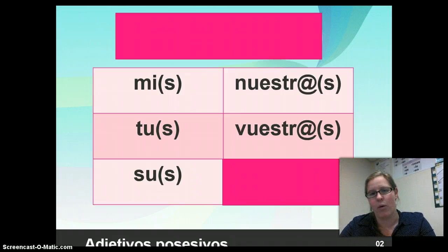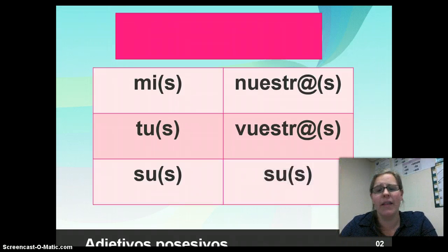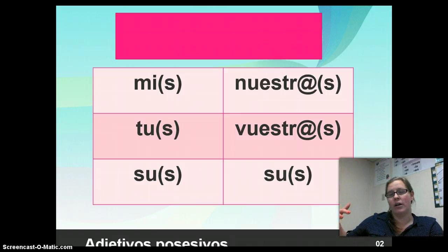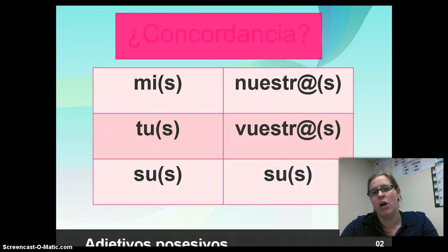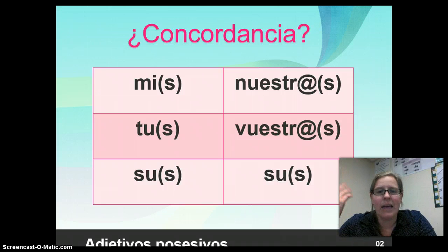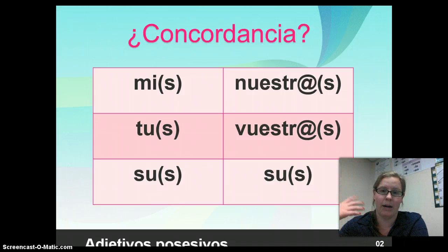And what are they having concordancia with? With whatever the item is that's being owned. The last one is actually great because it's a duplicate of the singular version: su and sus. So I could say 'their dog' — su perro — or 'their dogs' — sus perros. I'm just making sure I have that agreement in number with whatever is being owned. Yes, we do have concordancia, but you have to remember what we have concordancia with — and it's always going to be with the item that's being owned, or possessed.